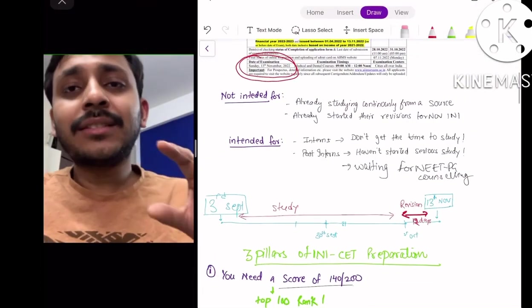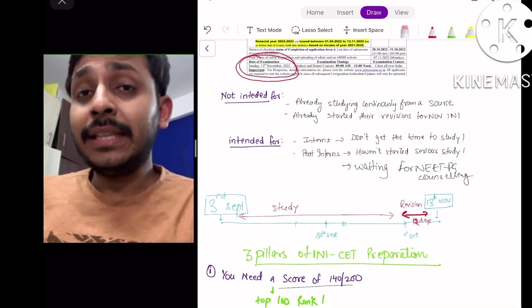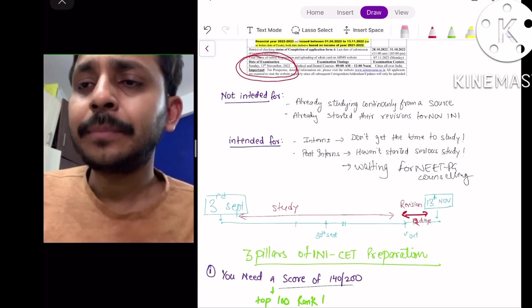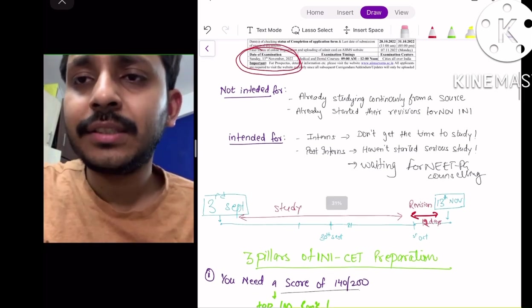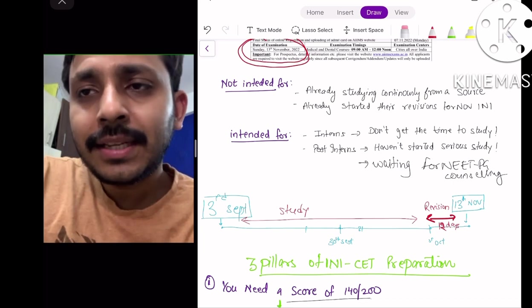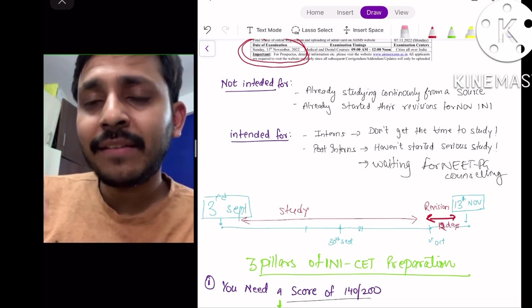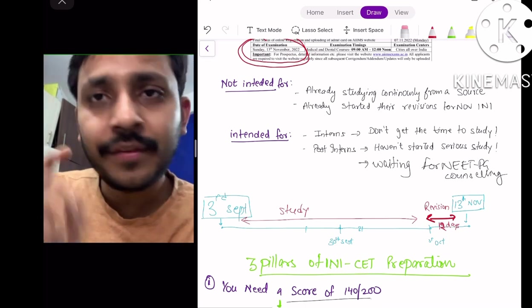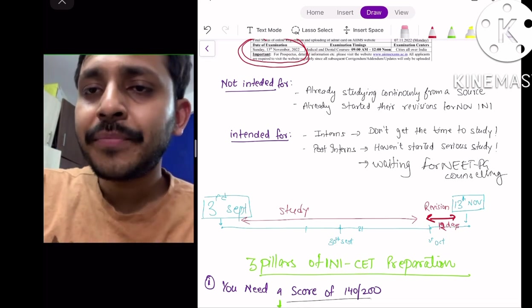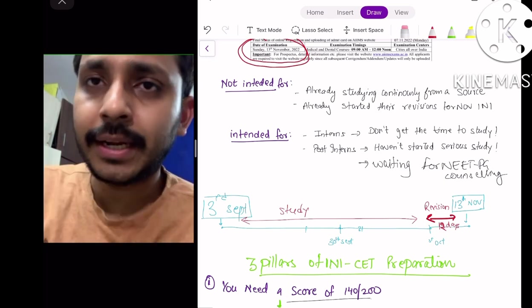Today is 3rd September and your final exam will be on 13th November. So we have around 2 months duration, and I have divided this whole period into 2 parts - the last 12 days and the remaining period. The last 12 days I have kept separate because that will be the time when you will do your revision. From 3rd September to 31st October, this is the time where you will study.